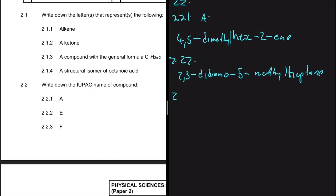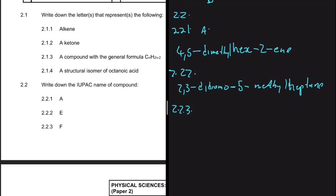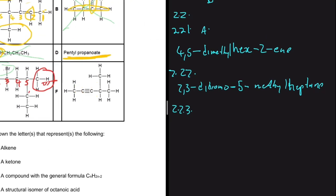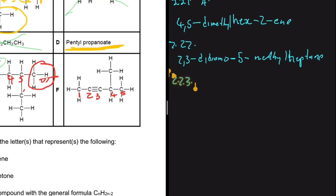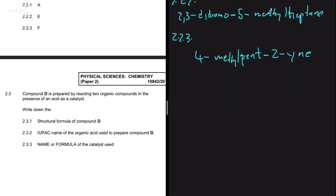For 2.2.3, let's write the IUPAC name of compound F, which is an alkyne. Because we have a functional group, we always prioritize it when numbering. Starting from that carbon: 1, 2, 3, 4, 5 — five carbons total, so the prefix is 'pent'. The triple bond is on carbon 2, giving 'pent-2-yne'. There's a branch on carbon 4, so we add '4-methyl'. The full name is 4-methylpent-2-yne.